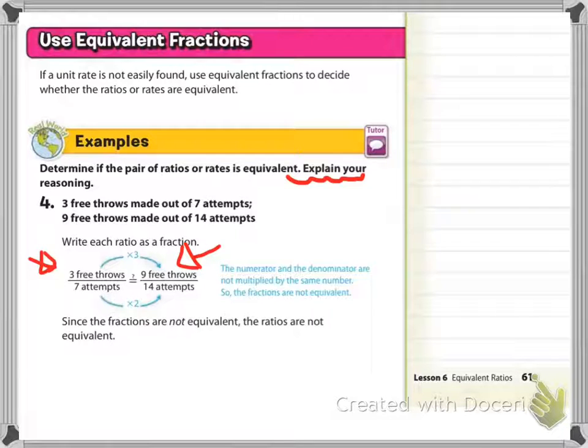Now let's compare the numbers across the bottom, your denominators, and see what you have to do. So to move from the left to the right on the bottom, you would have to multiply by 2.